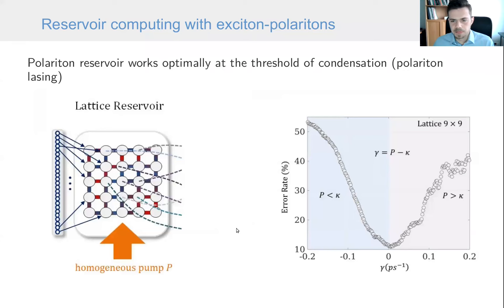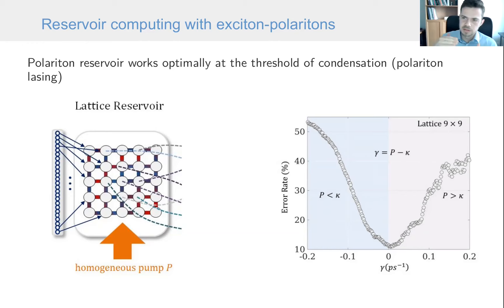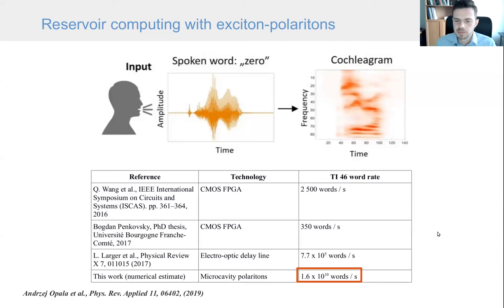We found that the network works best when operating close to the threshold of condensation. Because polaritons are bosons, they can undergo bosonic condensation — an analog of Bose-Einstein condensation. At this phase transition threshold, the system becomes very sensitive to the provided information and can perform a very nonlinear transformation of data. From our theoretical estimates, the system should be able to perform spoken digit recognition at speeds orders of magnitude better than other physically-realized systems.